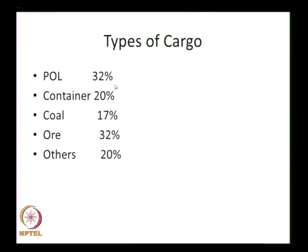Before going into the different types of birthing structures, we should know what are the different types of cargo it handles. This is the Indian scenario: POL (petrol, oil and lubricant) is about 32 percent, container 20 percent, coal 17 percent, ore 32 percent, and other cargo like wood, fertilizer and wheat constitute about 20 percent. So maximum cargo at 32 percent is POL, then container, coal and ore constitute another component for which we have to design.